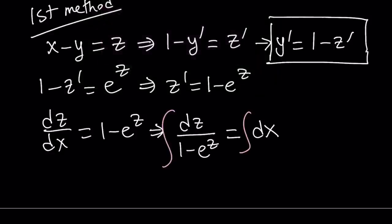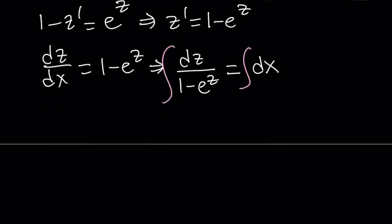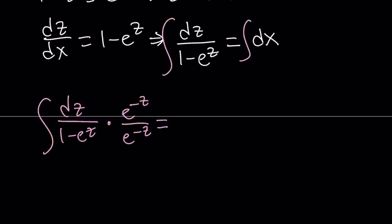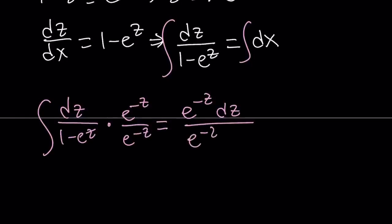So let's go ahead and integrate. Now when we integrate the left hand side, how do you integrate 1 over 1 minus e to the power z? Let's use a clever manipulation: multiply the top and the bottom by e to the power of negative z. That gives us e to the power of negative z dz divided by e to the power of negative z minus 1. Integrating this is definitely easier than the previous form.